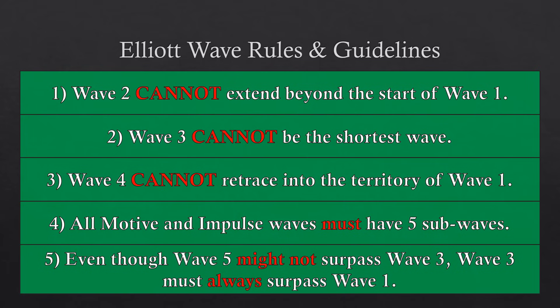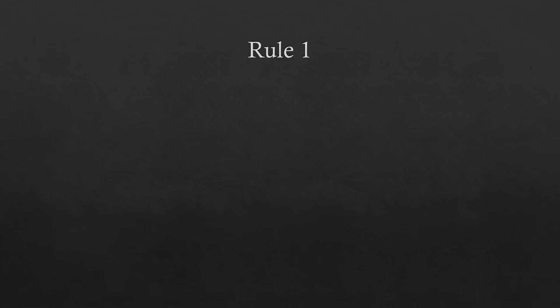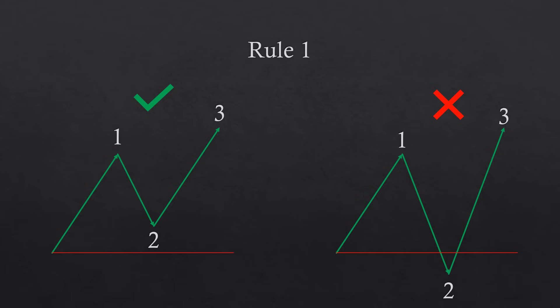In a correct wave count, wave two doesn't surpass the beginning of wave one. If wave two does surpass the beginning of wave one, the wave count is incorrect and this cannot be considered a wave two — it's something else.